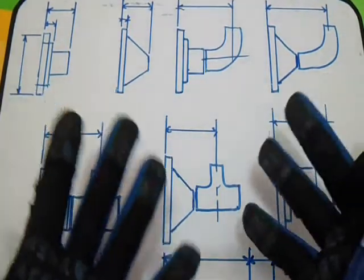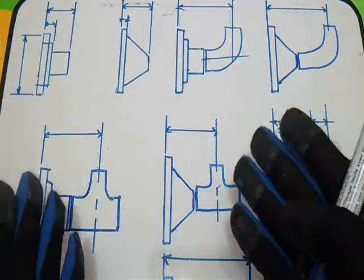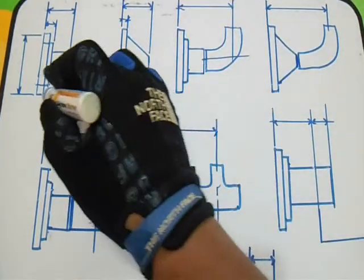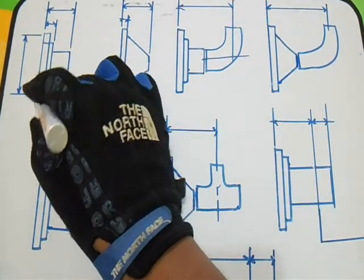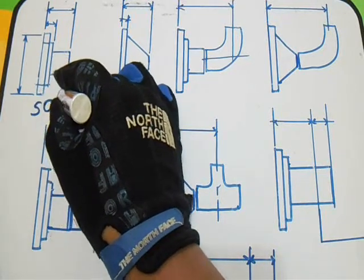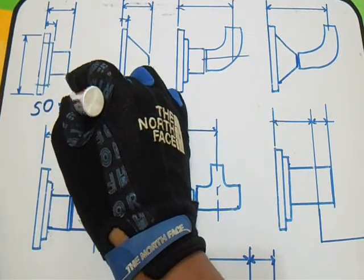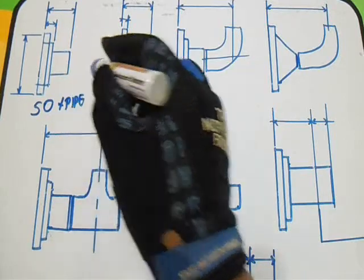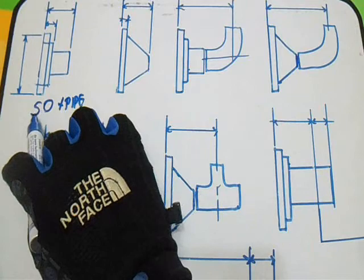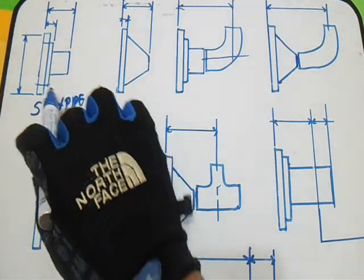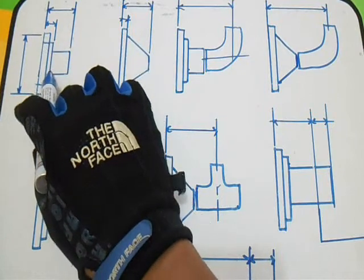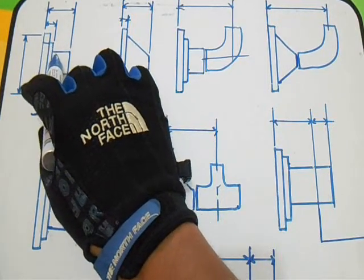We will use these flanges and flange fittings. First, this is the slip-on flange (SO plus pipe). This is our symbol for slip-on.